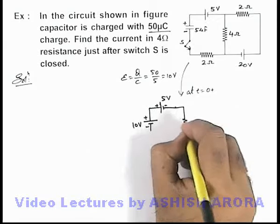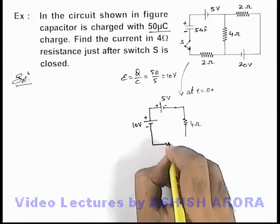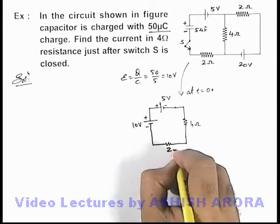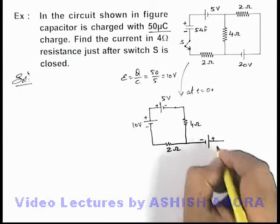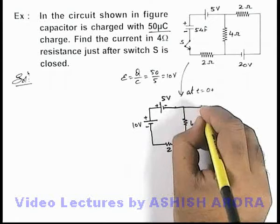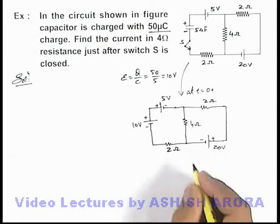And this is the 4 ohm resistance which is given in the circuit, and after closing the switch, this 2 ohm resistance is also connected in the loop. And this is the 20 volt battery, and this is the 2 ohm resistance which is also present over here.